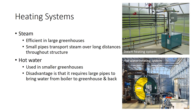Heating systems commonly used in greenhouses are steam heating, hot water heating, forced air heating, and radiant heating such as infrared and solar radiation systems. For steam heating systems, water is heated to temperatures between 212 and 215 degrees Fahrenheit. Small pipes transport the steam over long distances through the greenhouse, and this system can be efficiently used in large greenhouses. Although steam can be transported long distances, it condenses on pipes, so provisions must be made to drain and recirculate water for reheating.